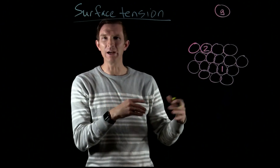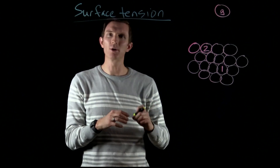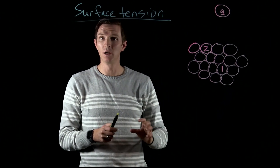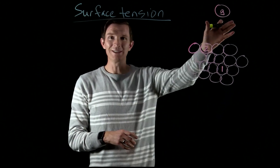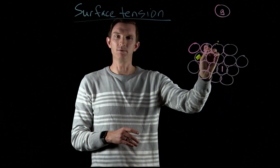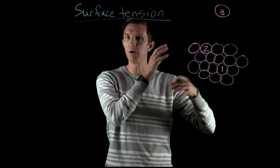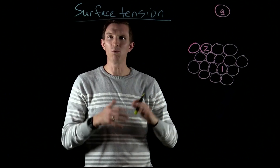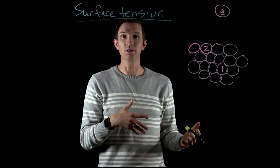We want to talk about what factors contribute to this. In order to do that, we're going to look at three different particles in three different places of a liquid: one is a gas particle, one is a particle sitting at the surface, and one is sitting in the bulk, surrounded by a bunch of other particles. We want to look at what's the difference between each of these with respect to energy.